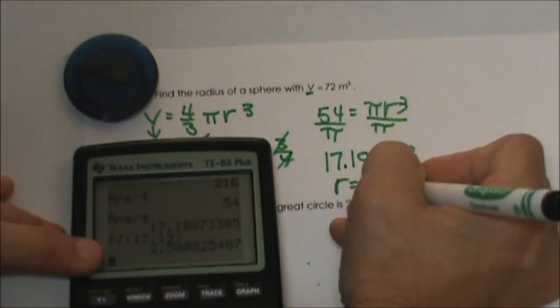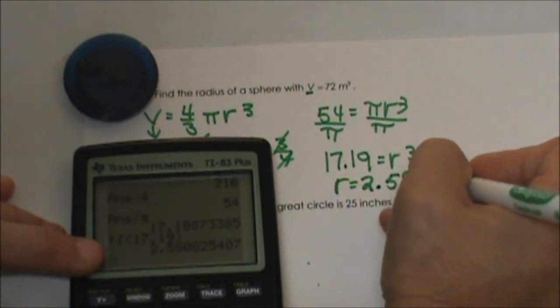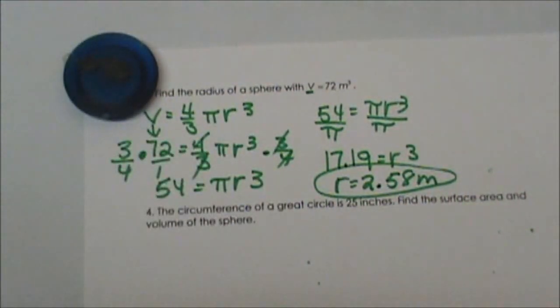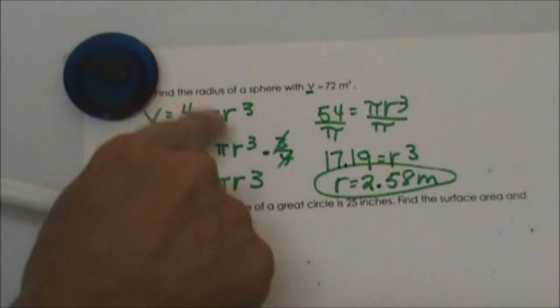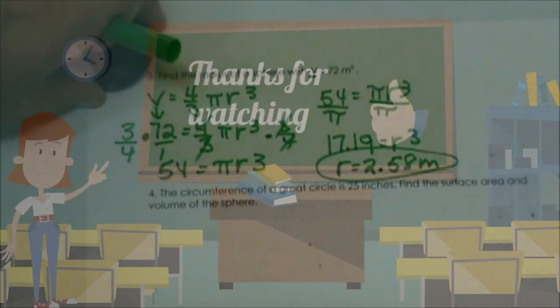I get 2.58. If you just brought your answer down it is probably pretty close. So our radius is 2.58 and this was in meters and that is how we would find the radius. A little bit of undoing and a little bit of algebra that you are going to have to manipulate around.